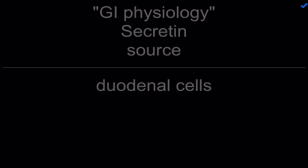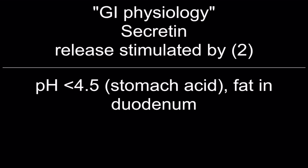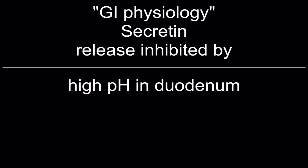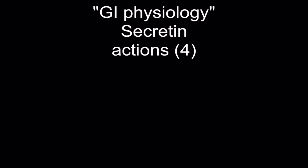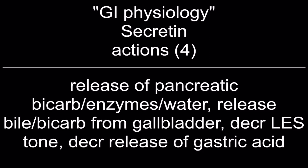Secretin — source: duodenal cells. Release stimulated by: pH under 4.5 (stomach acid) and fat in the duodenum. Release inhibited by: high pH in the duodenum. Actions (top four): release of pancreatic bicarb, enzymes, and water; release of bile bicarb from gallbladder; decrease lower esophageal sphincter tone; decrease release of gastric acid.